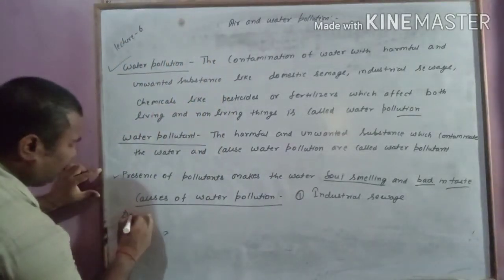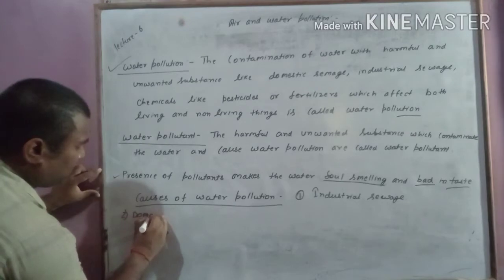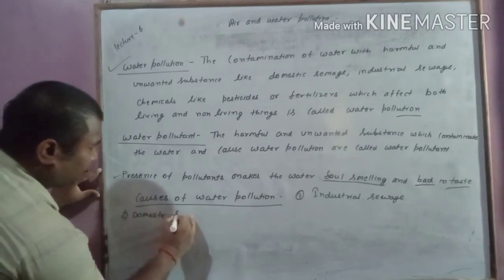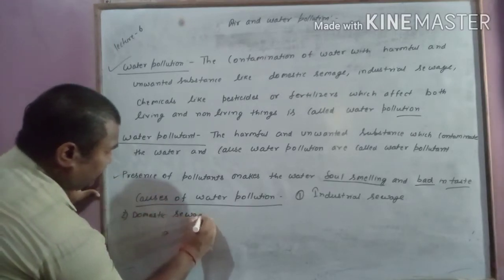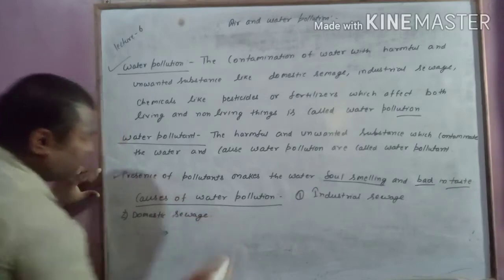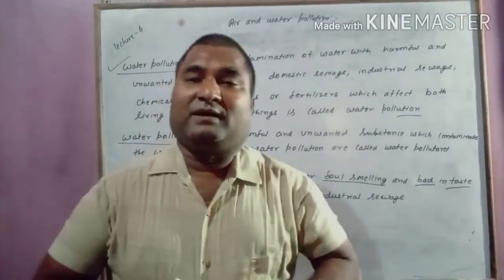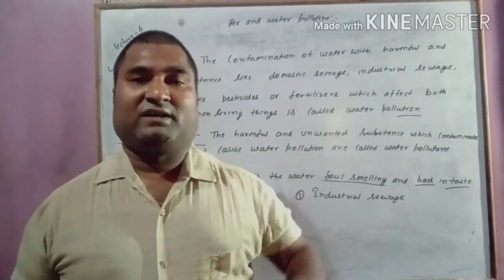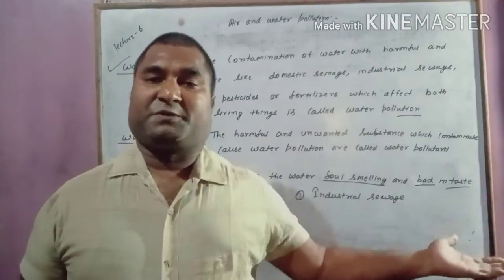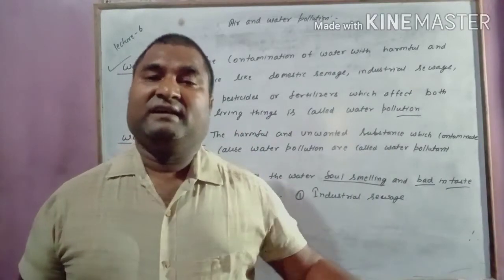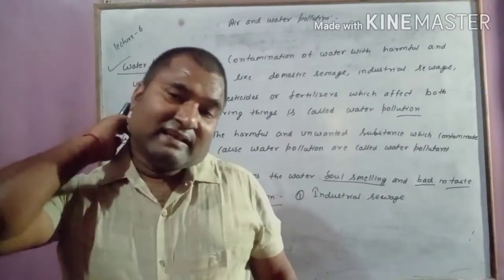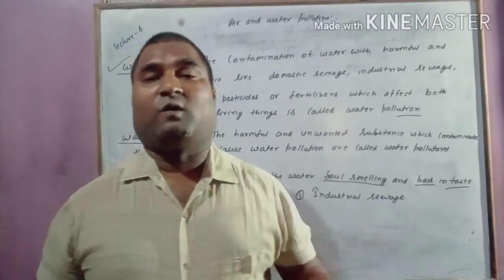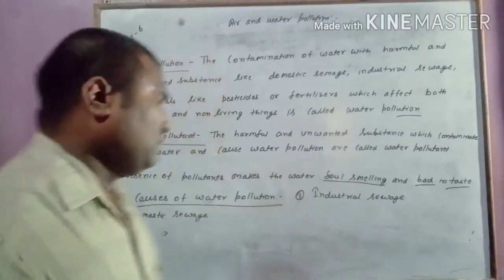Second is domestic sewage. The liquid or waste water coming from the washrooms and the kitchen that is released directly into the water will cause water pollution.